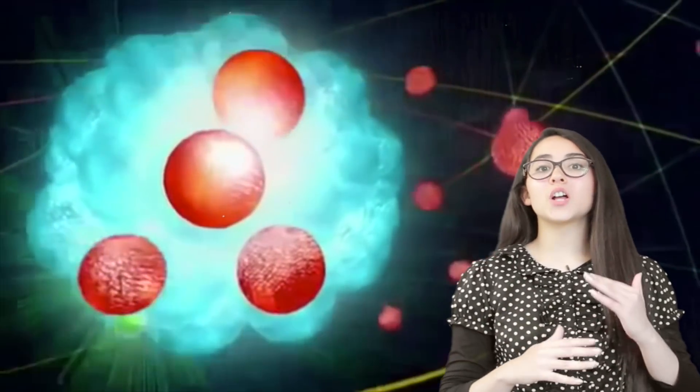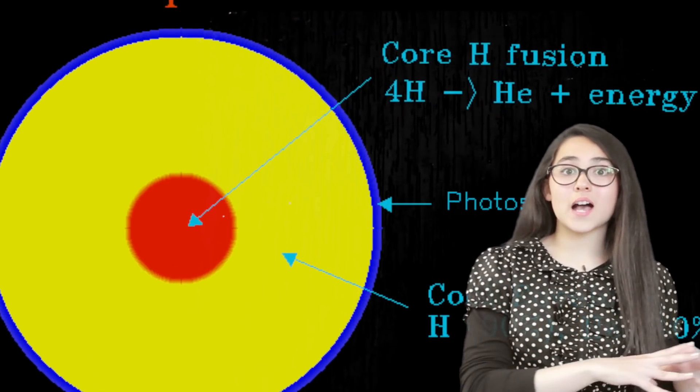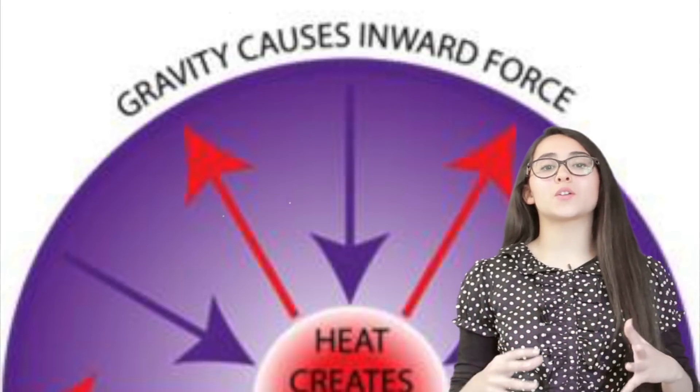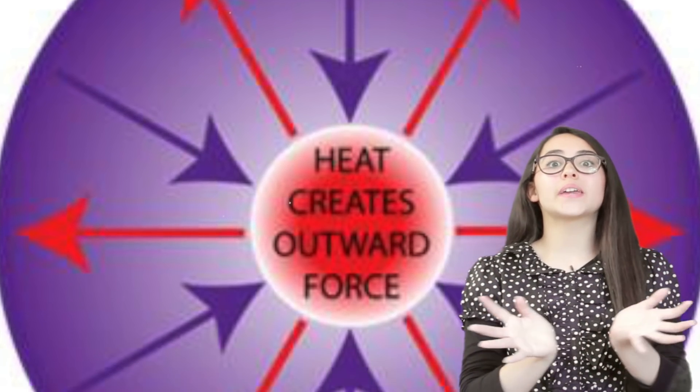Once a star is born, it will continue to burn energy for billions of years. This is the state of the star for the majority of its life and is called the main sequence. During this time, a balance is met between gravity wanting to shrink the star and heat wanting to make it grow bigger.